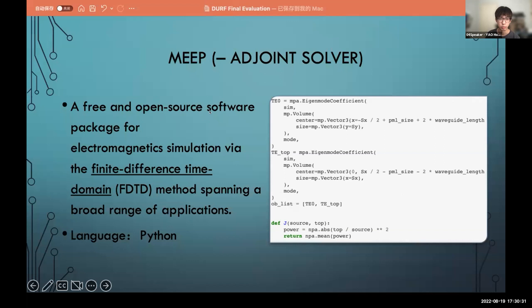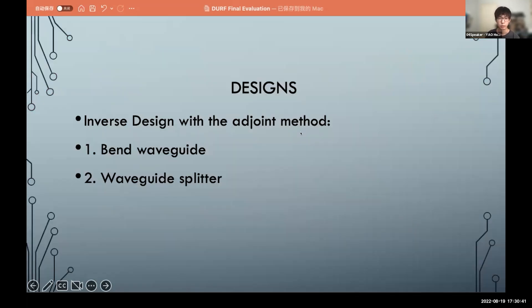So how do we use our adjoint solver? We use MEEP, a free and open source software package. The language is Python, and you can see that here is the code of my project. We use the MEEP inverse design with adjoint method to design two main fundamental components in the photonic circuit: the bend waveguide and the waveguide splitter.